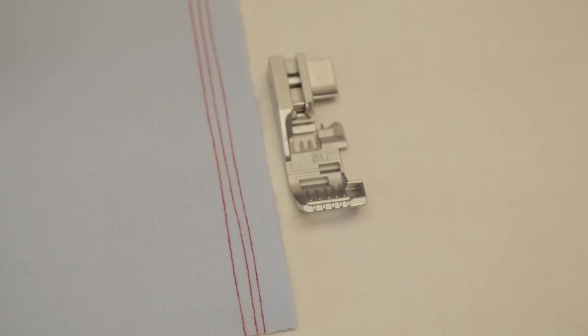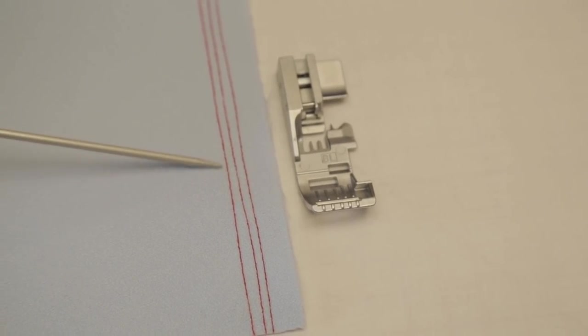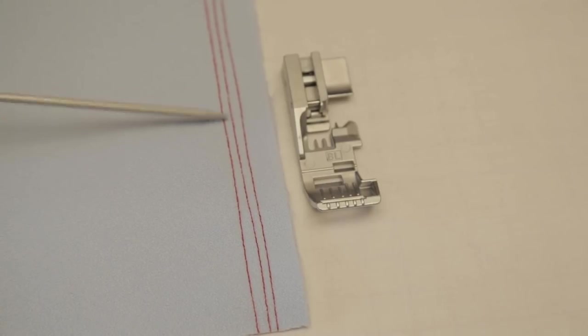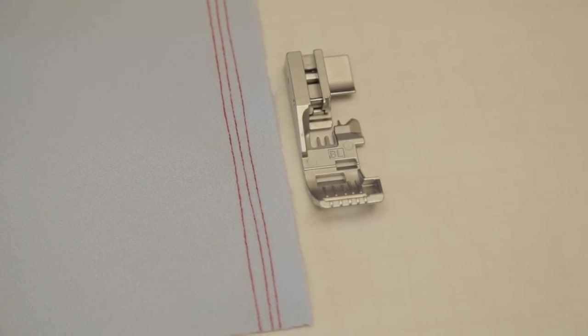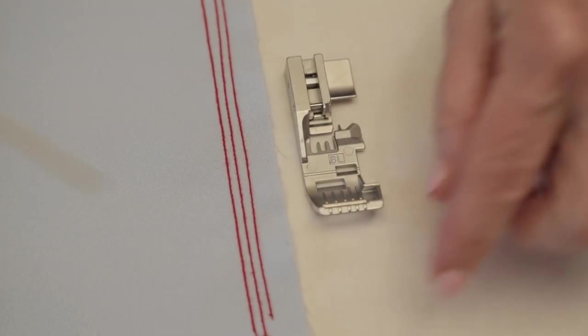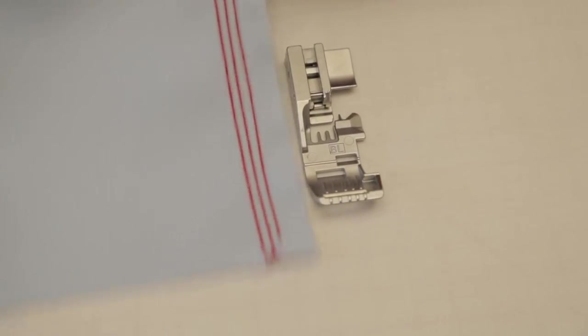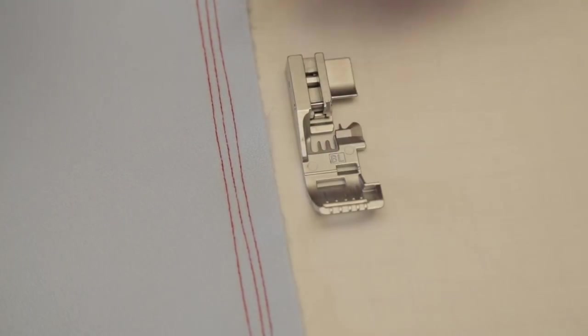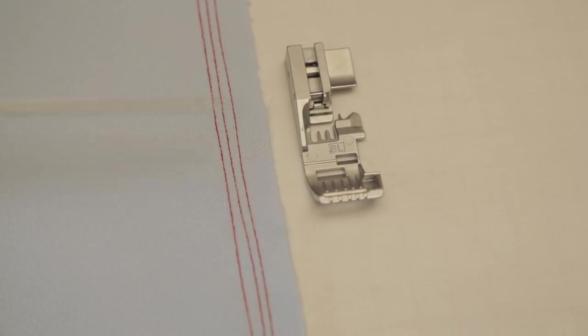Okay, what we're looking at on this piece of fabric, it looks like a triple cover stitch. But in actuality, let me flip it over, it's three lines of chain stitches that were done individually. And they're all next to each other and look like this for a reason.